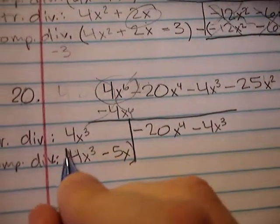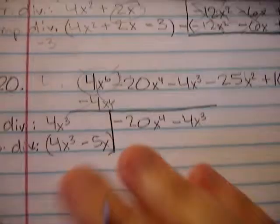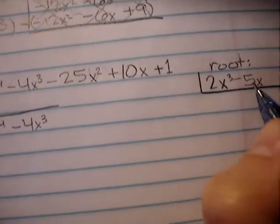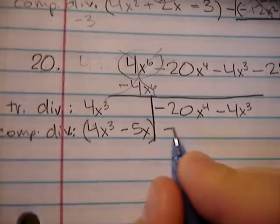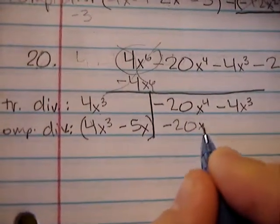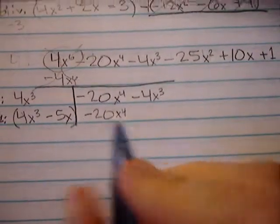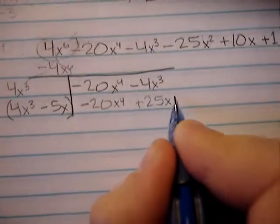Now to check our work here, I'm not really sure what the y is, but this is how, this is what's next with Abeka's process. Negative 5x times 4x cubed is going to be negative 20x to the 4th. And negative 5x times negative 5x is positive 25x squared.